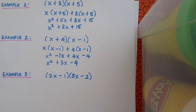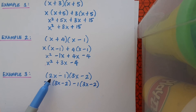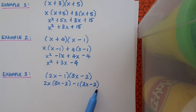Here's example 3. Same instruction: expand and simplify. Pause the video and see if you can manage this yourself — play just enough to prompt yourself if you get stuck. I'm going to split up the brackets. So I'll have the 2x from the first bracket multiplied by the second bracket: 2x bracket 3x minus 2. And I also have the minus 1 from the first bracket multiplied by the whole second bracket: minus 1 by 3x minus 2.